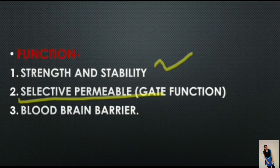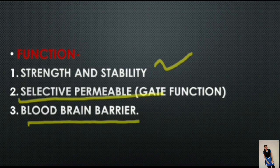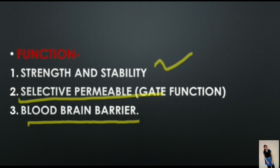The third and most important function of tight junction is the blood-brain barrier (BBB). Tight junction in brain capillaries forms the blood-brain barrier, which prevents the entrance of many substances from capillary blood into the brain tissue. Only lipid-soluble substances like drugs and steroid hormones can pass through the blood-brain barrier.